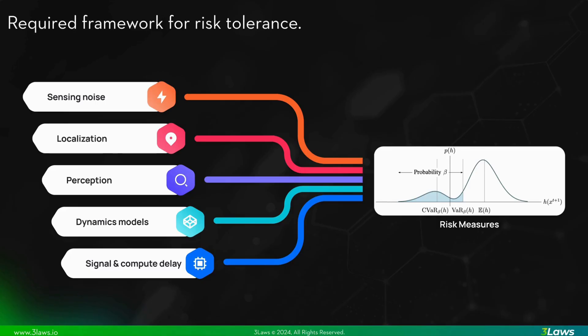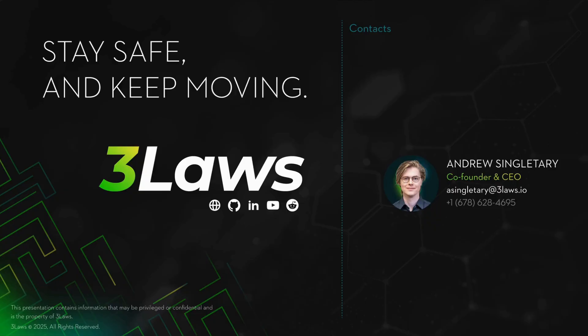Overcoming these challenges results in the benefit of a quantitative framework for assessing and managing the risk induced by different sources of uncertainty in real-world robotics deployments. Because of unbounded uncertainties and potential adverse actors, absolute guarantees of safety are impossible. Instead, a thorough understanding of the risks is required for safe deployments. Thank you all for coming to this talk.